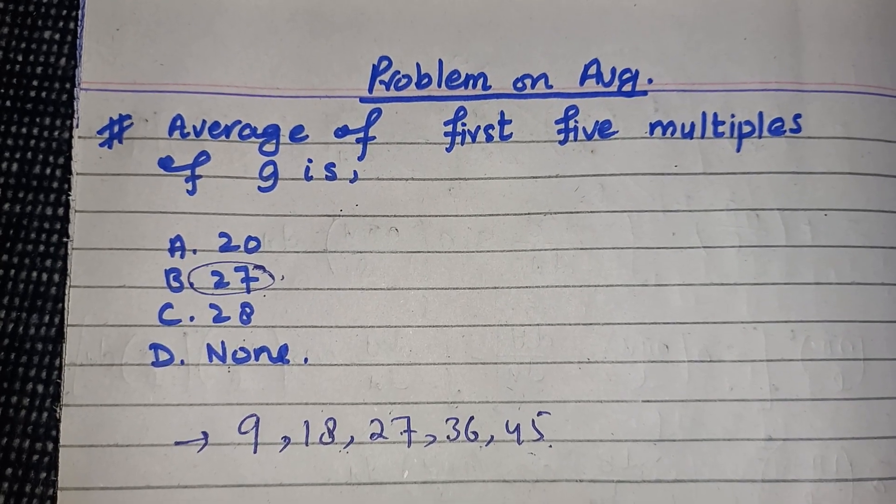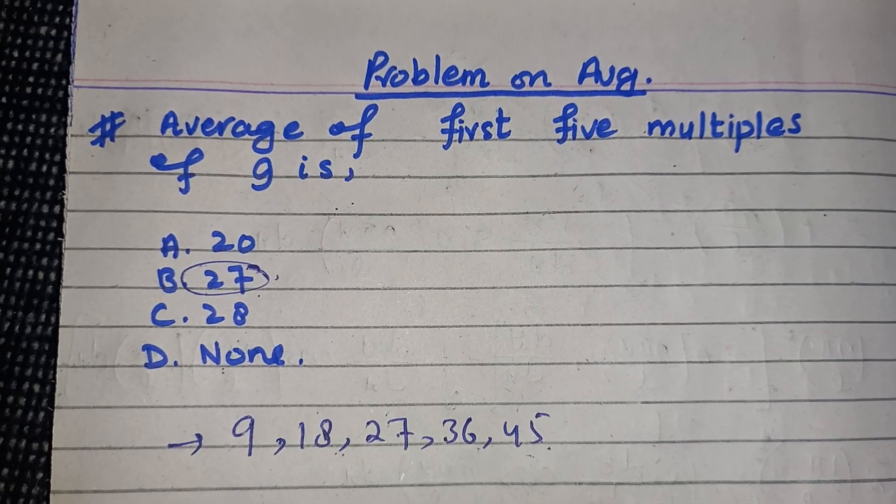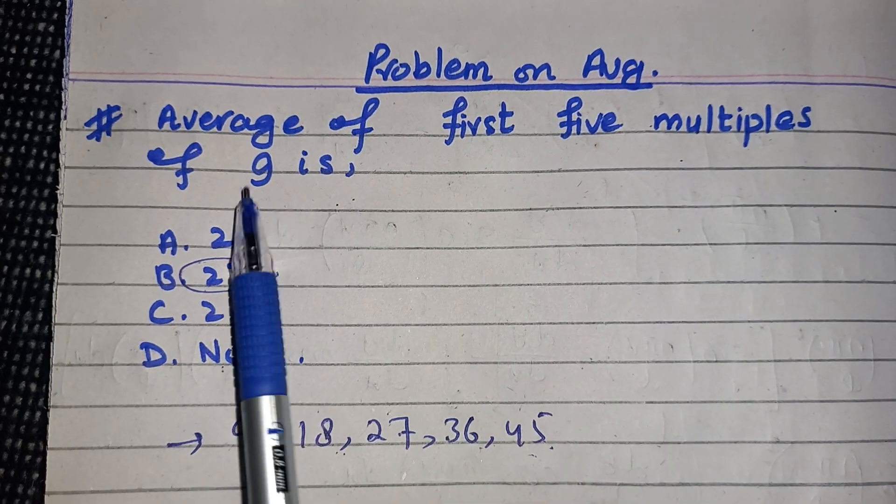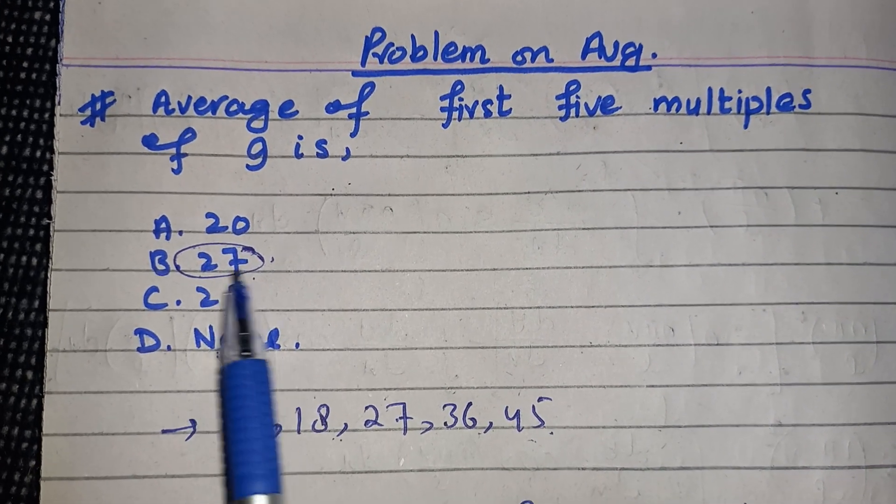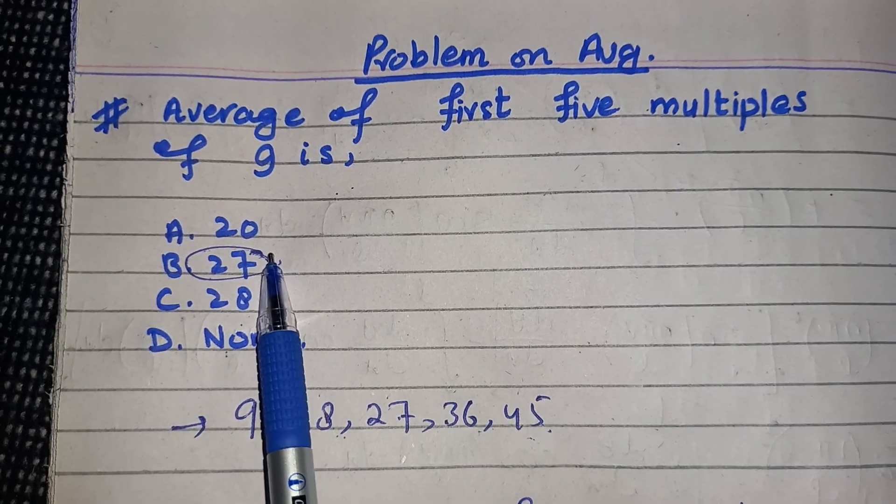Hello everyone, now we will discuss a problem on average. The problem is: average of first five multiples of nine is? The options are 20, 27, 28, and none. The answer is 27, but let us discuss the procedure.